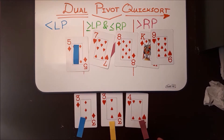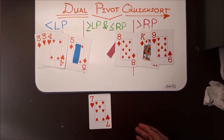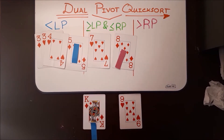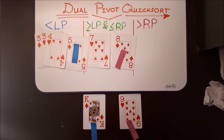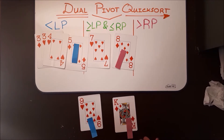Now we can move on to our next subarray. As you can see, this subarray only contains one element, so it's already sorted for us. Now we can move on to our next and final subarray. Let's identify our left pivot and right pivot. King is gonna be our left pivot and nine is gonna be our right pivot. However, there is a problem — King is greater than nine, so we're gonna have to switch these around. Now the King is our right pivot and nine is our left pivot. Since there are only two elements in the subarray, the subarray is already sorted for us.